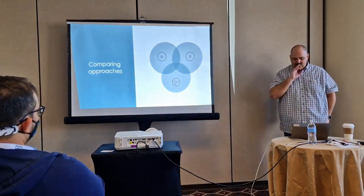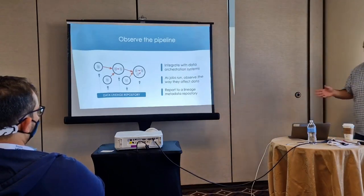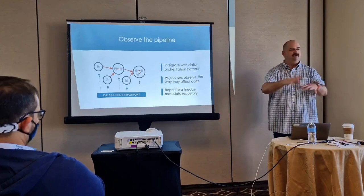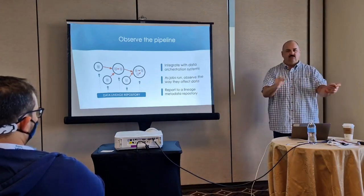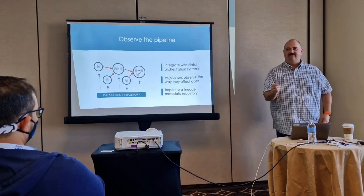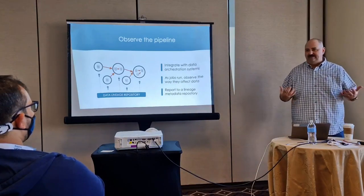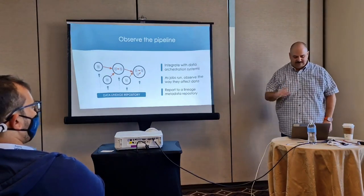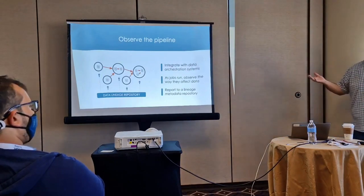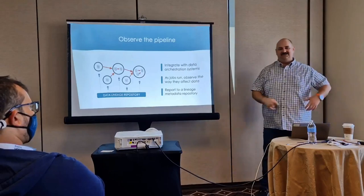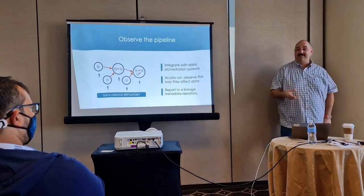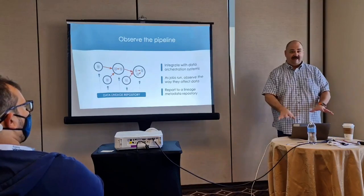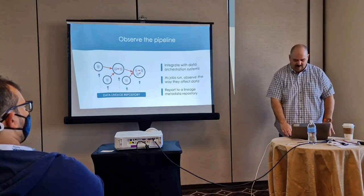The first approach — and this is where Open Lineage was primarily designed — is for observing pipelines. You integrate in some way with a pipeline system, a data orchestration tool, and as jobs run and data sets are created, you observe the way they affect data and report what you've learned to a metadata repository. This is how the Open Lineage Airflow integration works, and also the Spark and DBT integrations. This is really good for understanding everything that a particular system does. However, it's not good for things that happen outside your system — like somebody grabbing a database, dumping it, and reloading it somewhere else.